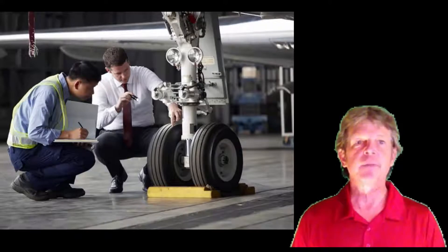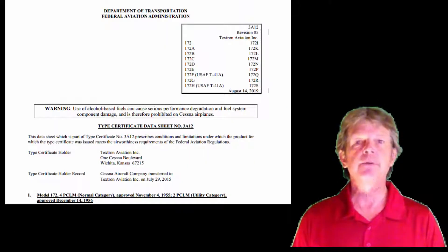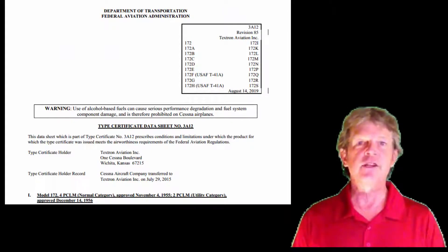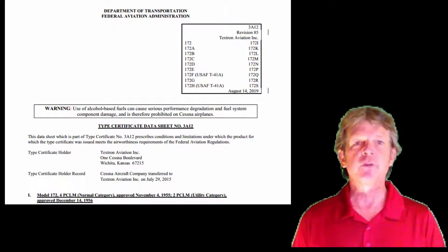Next, we look at documents. We'll look at the type certificate data sheet for the aircraft, the type certificate data sheet for the engine, and the type certificate data sheet for the propeller, and we'll determine that everything — the engine, the propeller — is correct for that airplane.